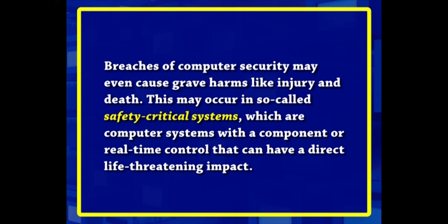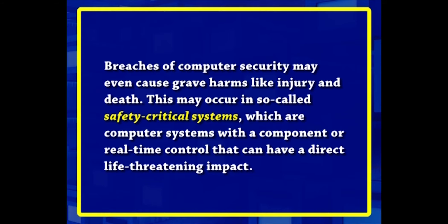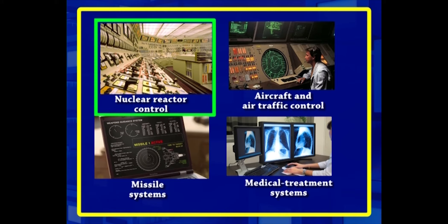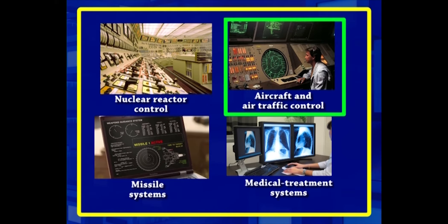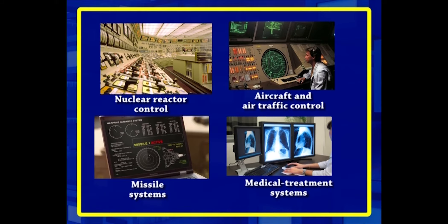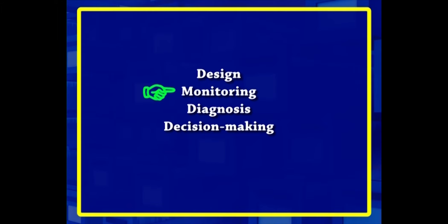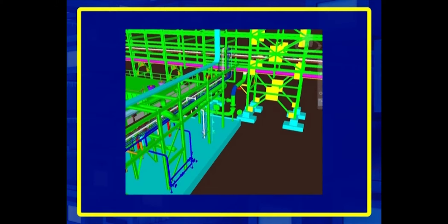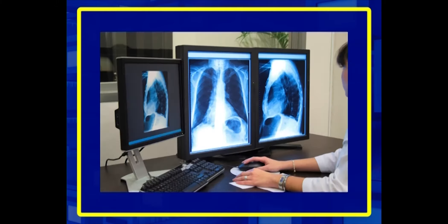Breaches of computer security may even cause grave harms like injury and death. This may occur in so-called safety-critical systems, which are computer systems with a component of real-time control that can have a direct life-threatening impact. Examples are computer systems in nuclear reactor control, aircraft and air traffic control, missile systems and medical treatment systems. The corruption of certain other types of systems may also have life-threatening consequences in a more indirect way — these may include systems used for design, monitoring, diagnosis or decision making, for instance systems used for bridge design or medical diagnosis.